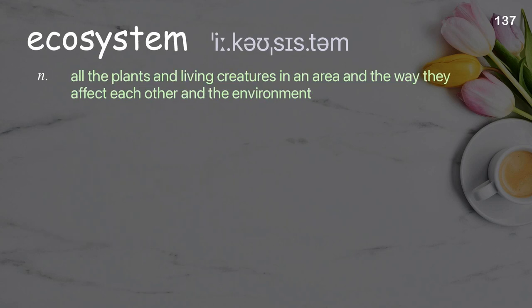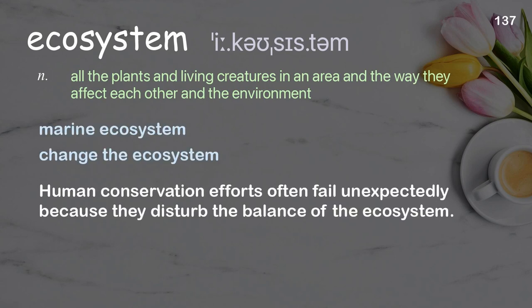Ecosystem: all the plants and living creatures in an area and the way they affect each other and the environment. Examples: marine ecosystem, change the ecosystem. Human conservation efforts often fail unexpectedly because they disturb the balance of the ecosystem.